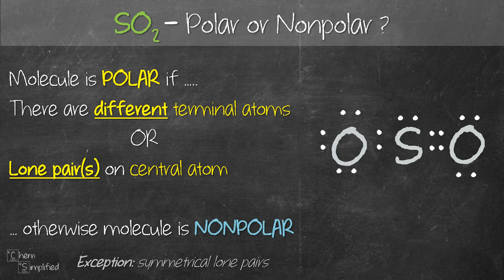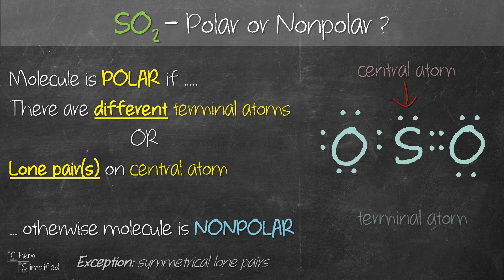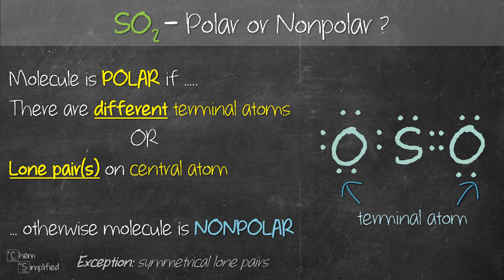If not, then it's nonpolar. If we look at the Lewis structure of SO2 on the right-hand side, sulfur is in the center — that's the central atom. It's surrounded by oxygens, so oxygens are the terminal atoms. We have two terminal atoms in this molecule and both of them are oxygen — they are the same. So the first criteria is not fulfilled.